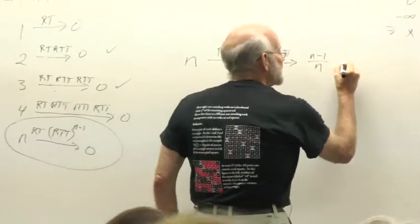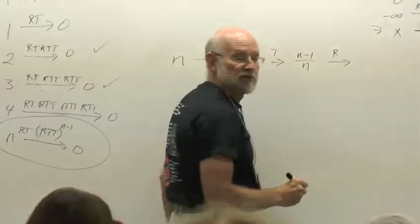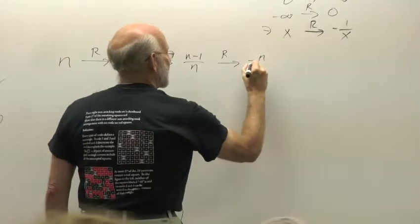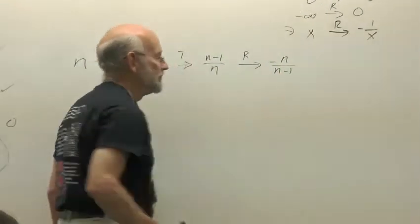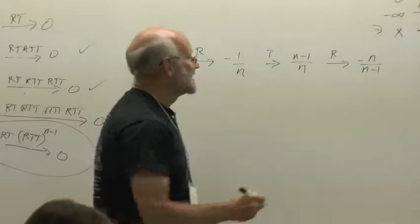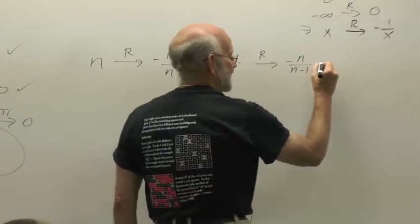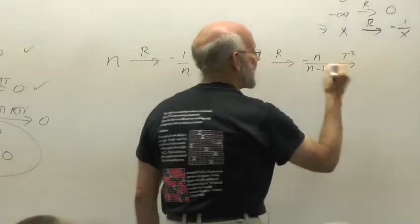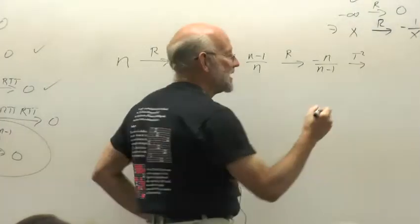But now what does RTT do? R takes this to negative N over N minus 1. Okay, T, T, T, so that'll add 2. So what will that do?